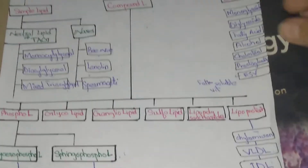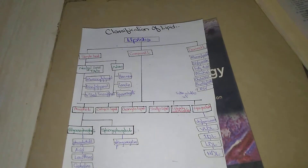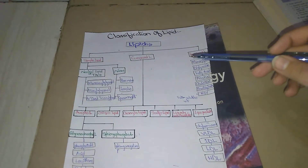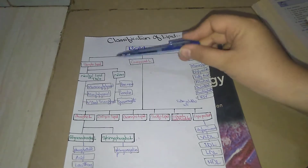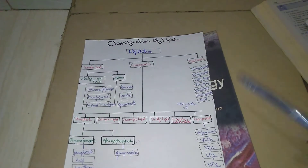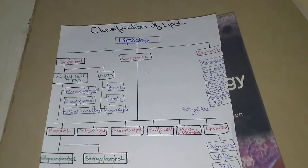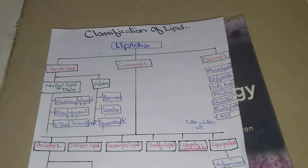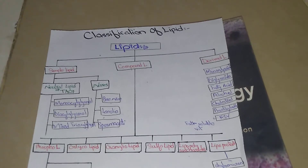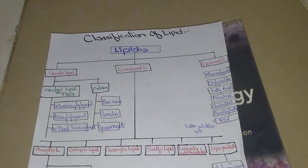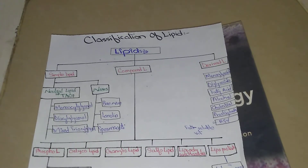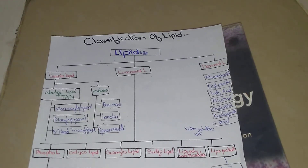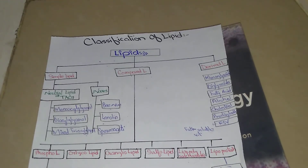So these are the summary of the classification of lipids. Lipids divide into three types: simple lipids, compound lipids, and derived lipids. Simple lipids further divide into two types — neutral lipid and wax. Compound lipids further divide into six types: phospholipids, glycolipids, gangliolipids, sulfolipids, lipopolysaccharides, and lipoproteins. Derived lipids include monoglycerides, diglycerides, fatty acids, and others. Hope you understand — thanks for watching.